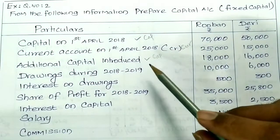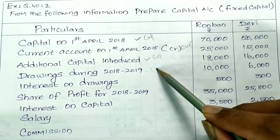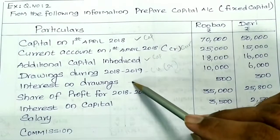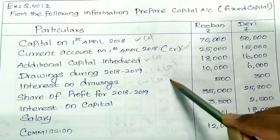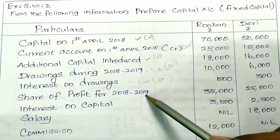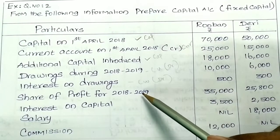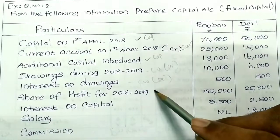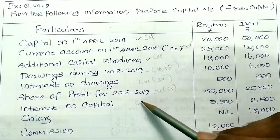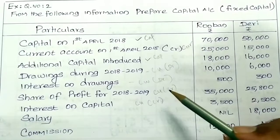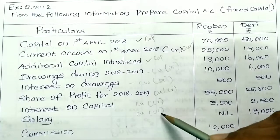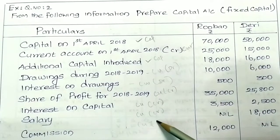Drawings during the year 2018 to 2019 go on the debit side of the current account. Interest on drawings is also on the debit side. Share of profit for 2018 to 2019 goes on the credit side. Interest on capital also comes in the current account on the credit side.